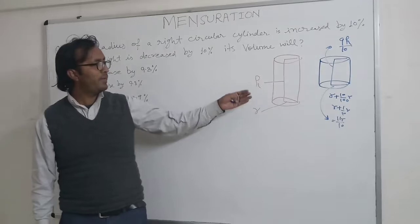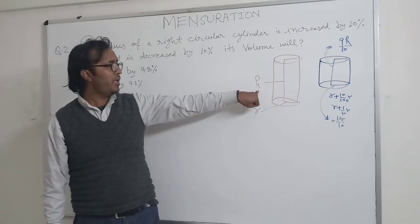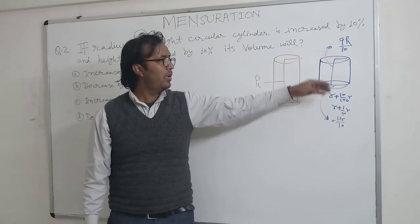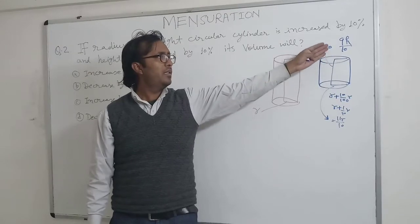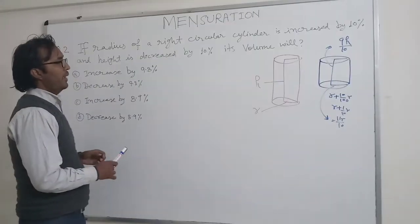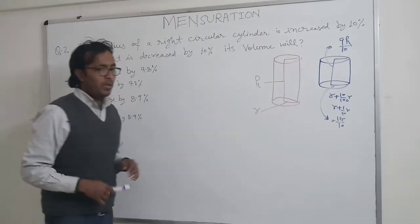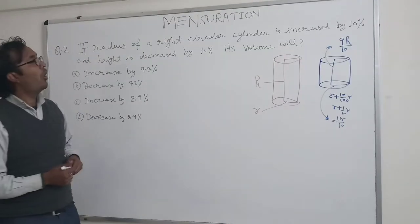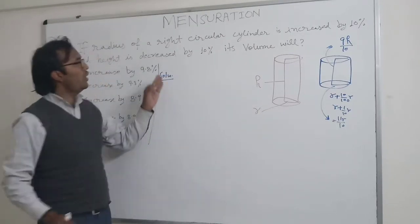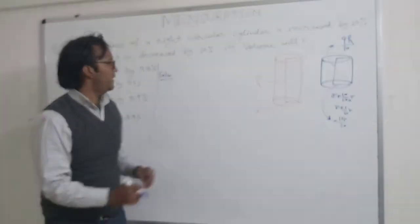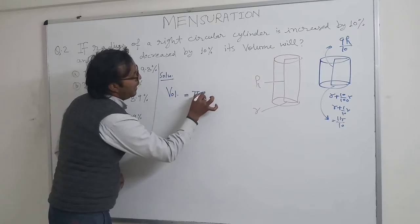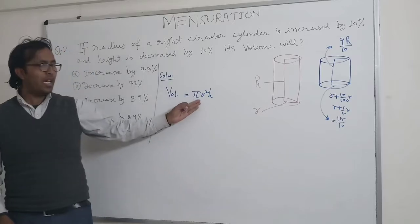So here are the two cases of the same cylinder: the original with radius R and height H, and the modified one with radius 11R/10 and height 9H/10. Now we look at the volume. The volume of the original cylinder is V1 = πR²H.